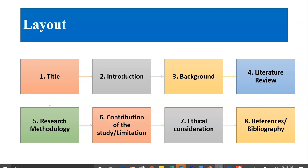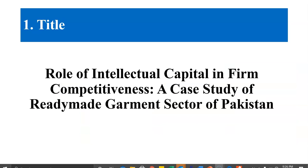Here is the layout of the synopsis. It starts with a cover page, then the title. Second is introduction, third is background, fourth is literature review, then research methodology, contribution, limitations, ethical considerations, and references and bibliography. For the title, one example is: 'Role of Intellectual Capital in Firm Competitiveness: A Case Study of Ready-Made Government Sector of Pakistan.' In some cases, there are predefined Ph.D. projects and a title is provided by the university. In other cases, the applicant is expected to provide a preliminary title.